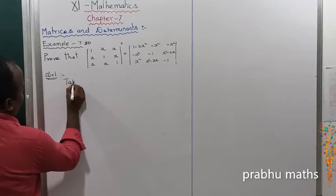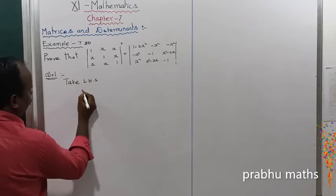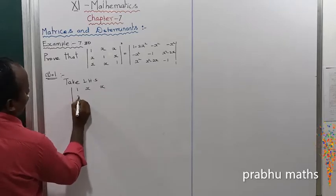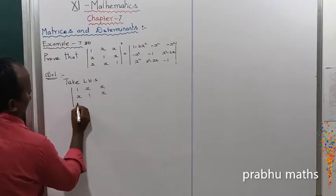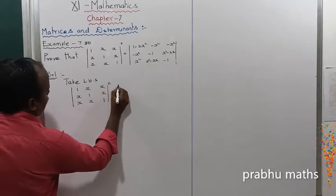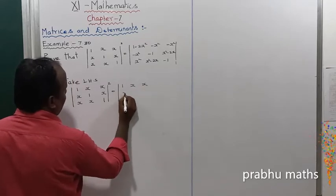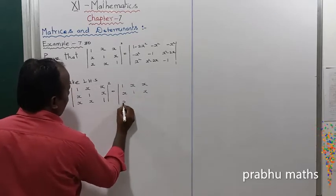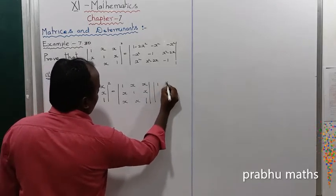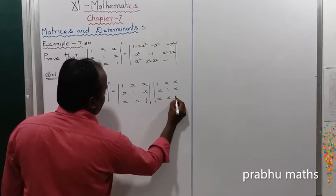Let us take LHS: determinant of [1,x,x; x,1,x; x,x,1] whole square is equal to determinant of [1,x,x; x,1,x; x,x,1] into determinant of [1,x,x; x,1,x; x,x,1].